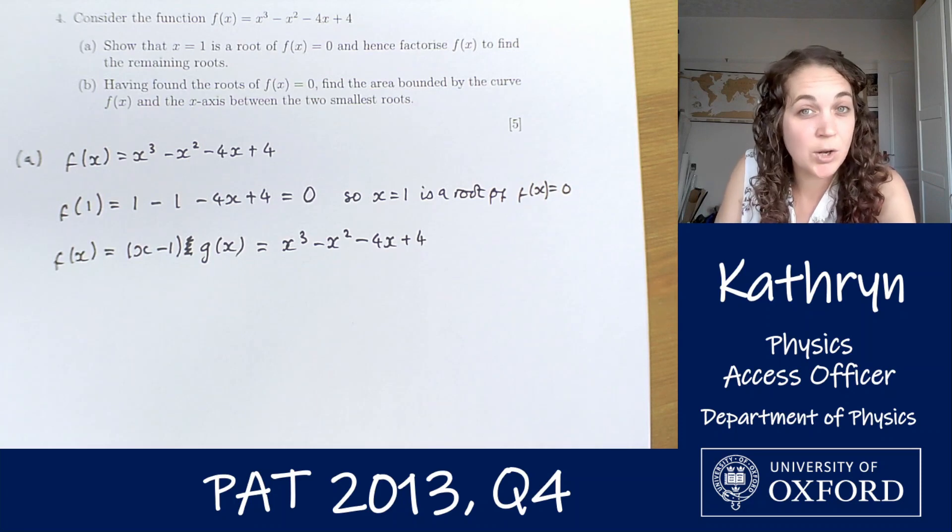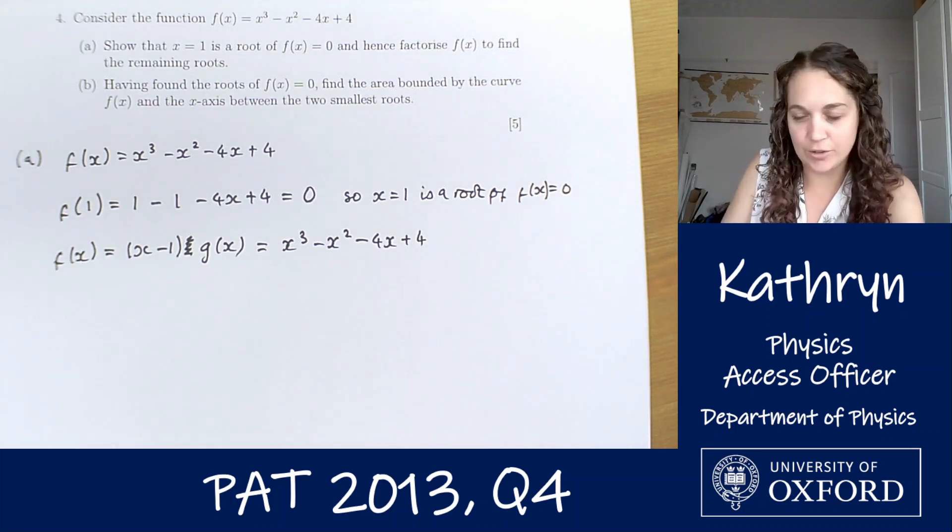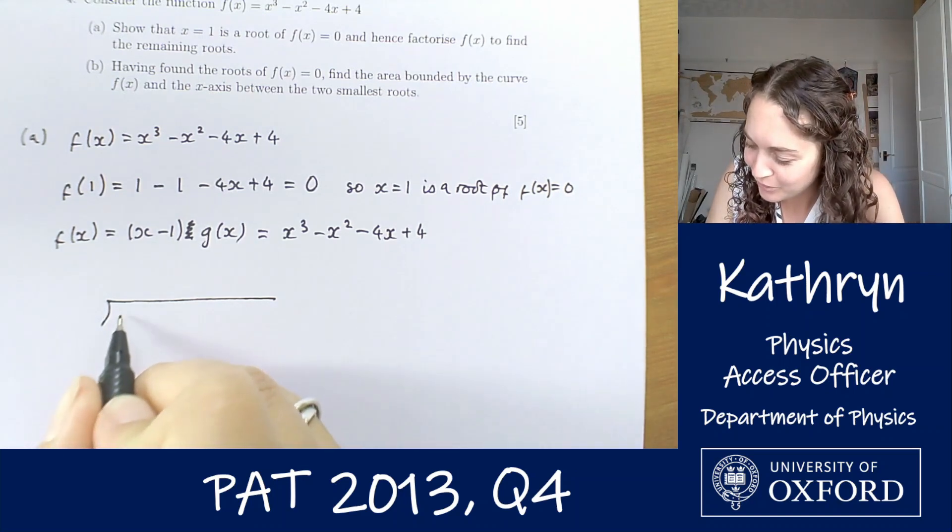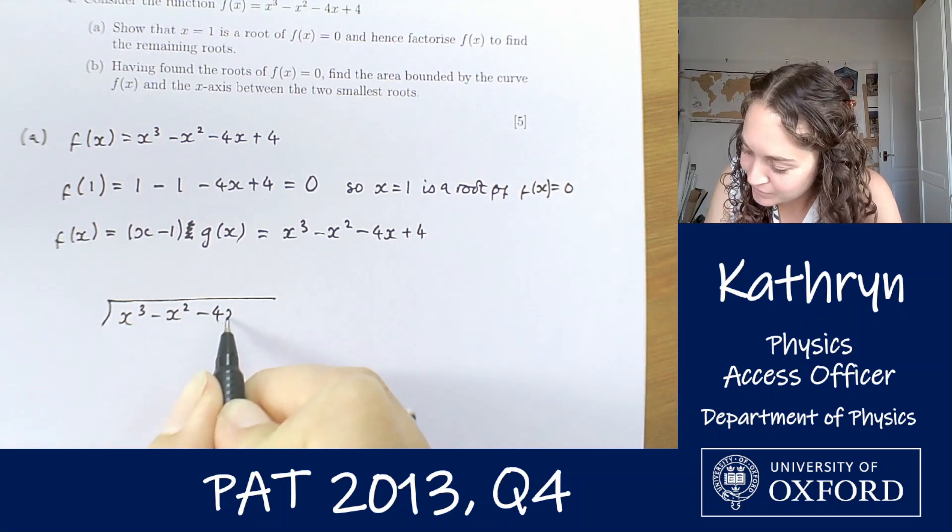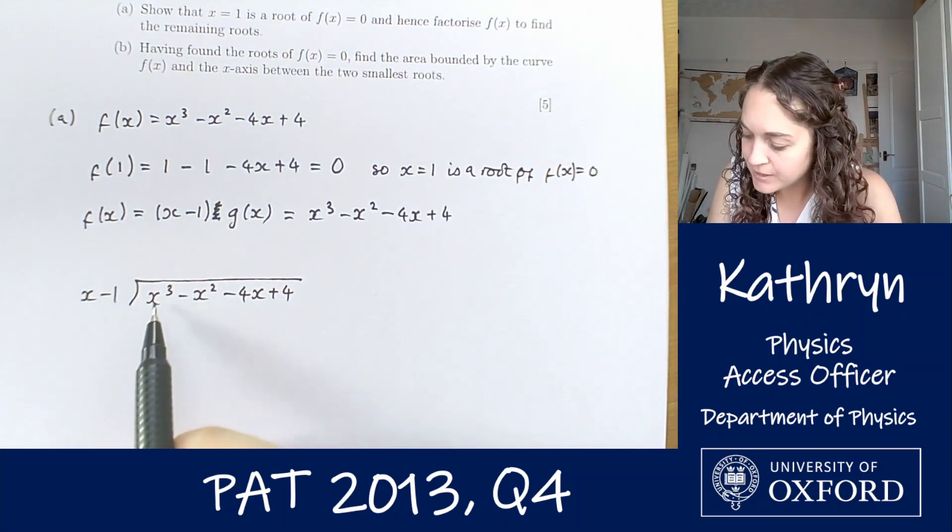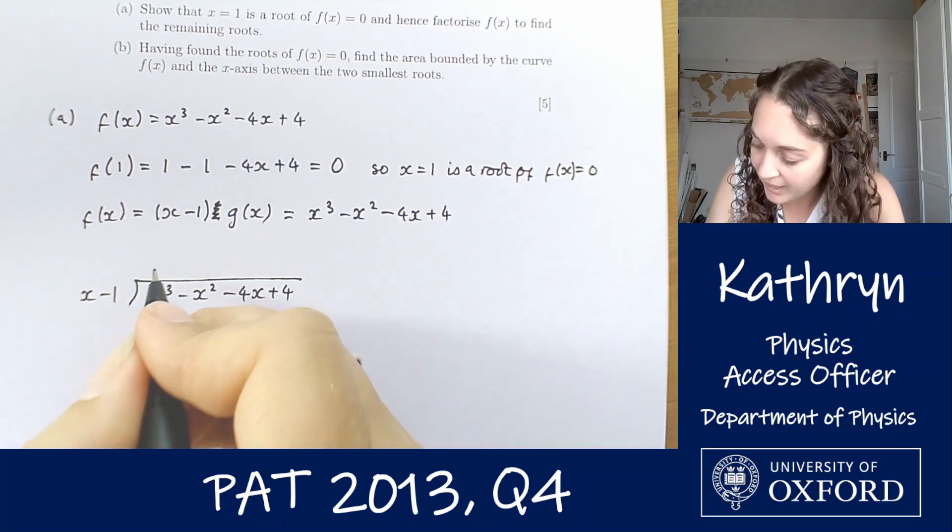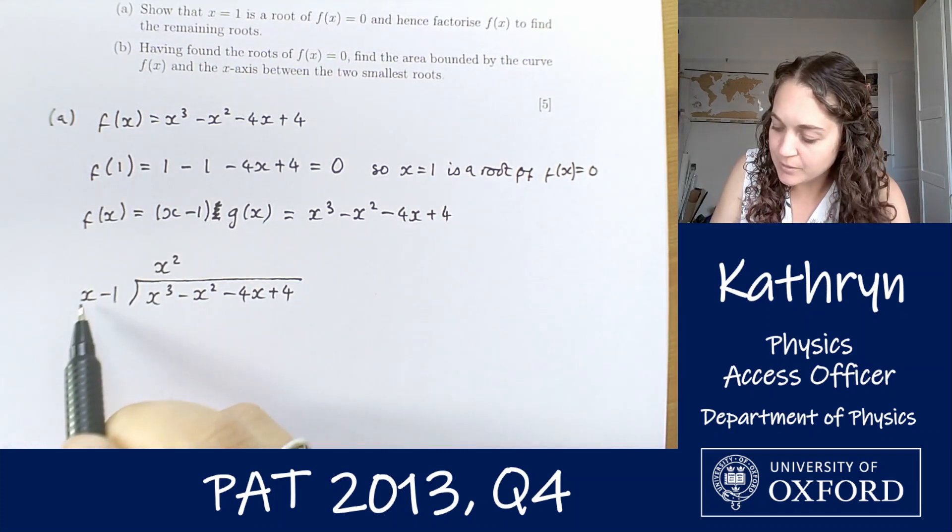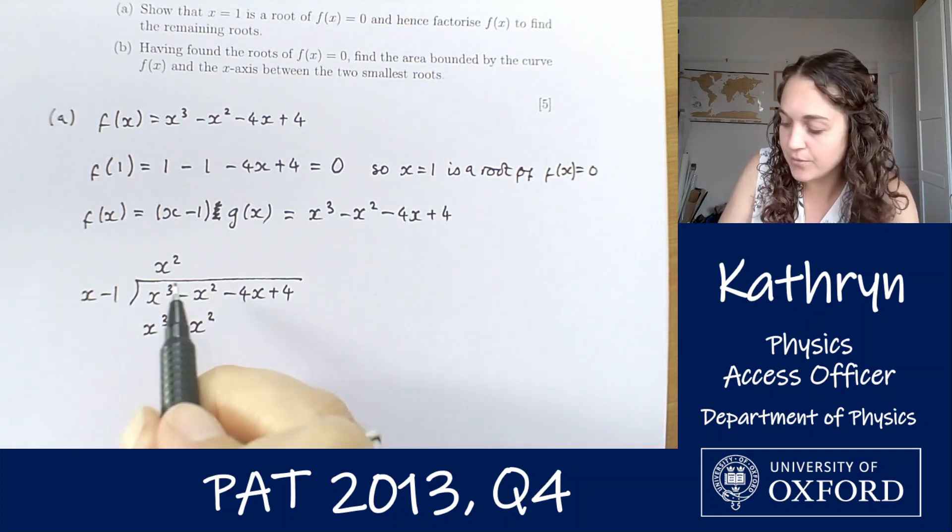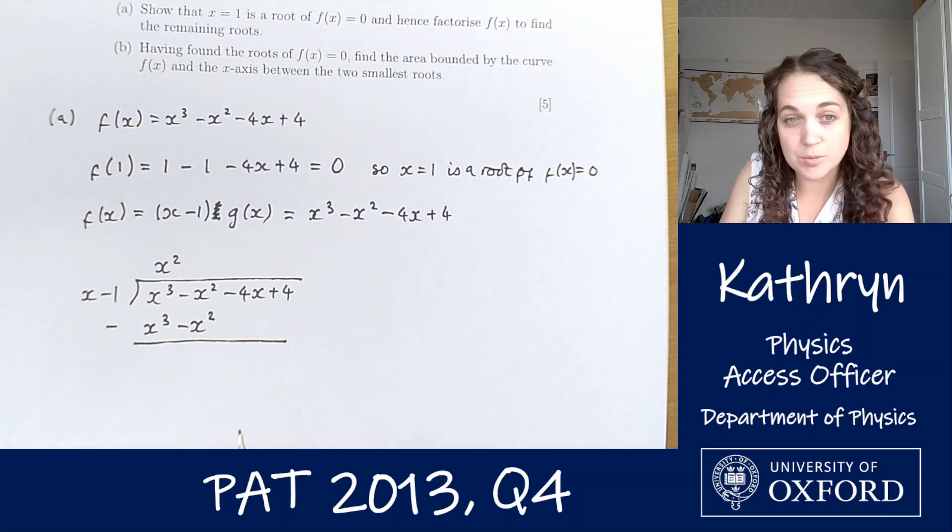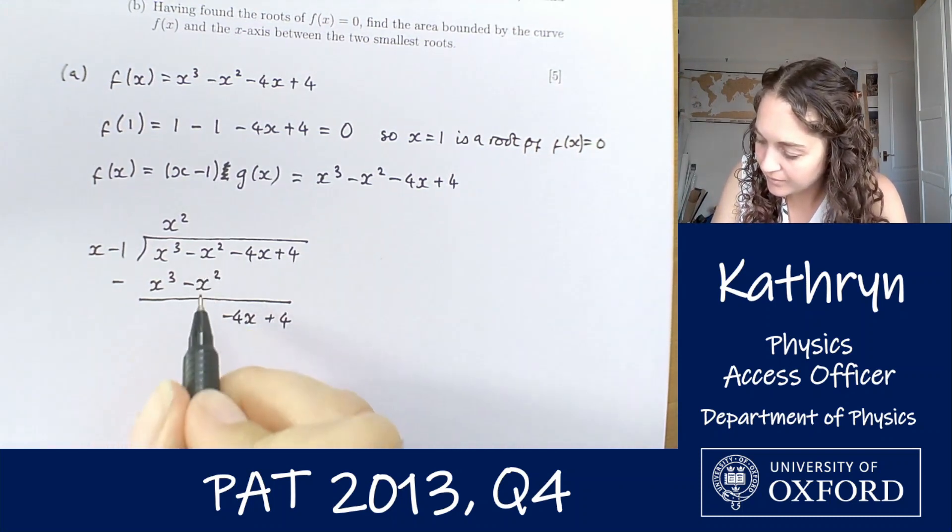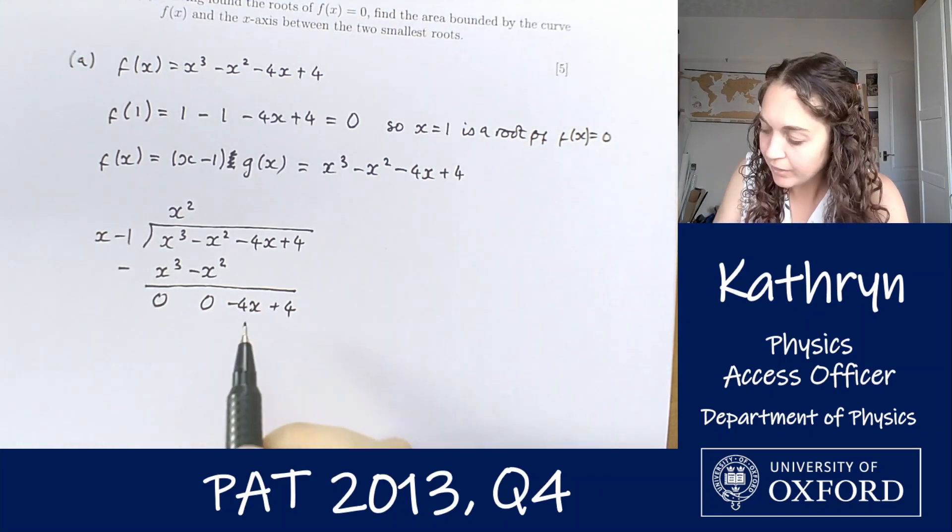The way I like to do this is just kind of like long division. You might have a different way that you prefer and that's totally fine. Some people call this a bus stop method. Inside our bus stop we've got x cubed minus x squared minus 4x plus 4, and we're dividing it by x minus 1. First, x minus 1 goes into x cubed x squared times. x squared times x is x cubed, x squared times minus 1 is minus x squared. Then we take all of the stuff in the bus stop and subtract off the thing that we've just multiplied out there, and that leaves us with 0 and minus 4x plus 4.